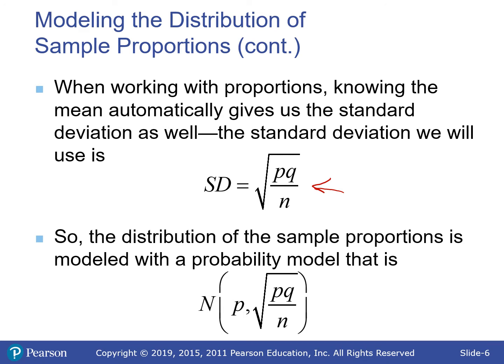As our sample size increases, we divide by bigger numbers and the standard deviation decreases. However, it's not linear — to cut the standard deviation by half, we have to increase the sample size by 4, because of the square root. So here we have a normal distribution centered at p, with standard deviations marked out in both directions.